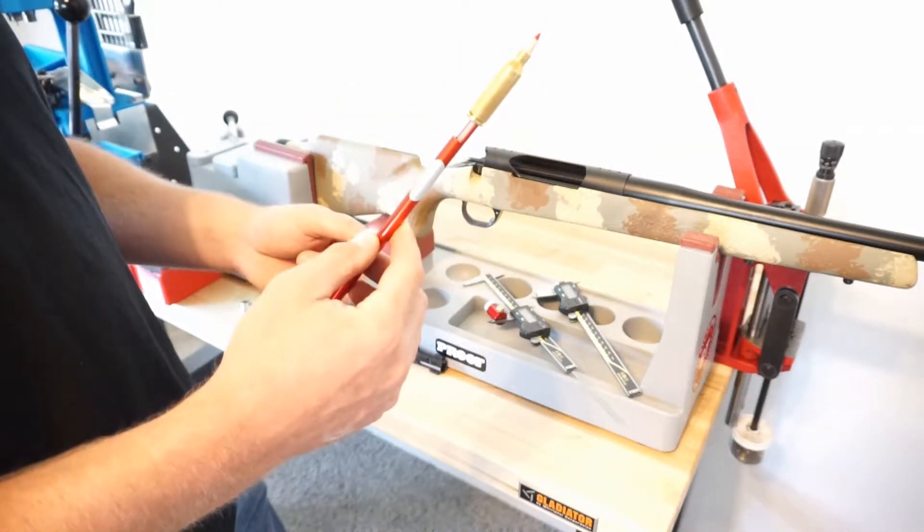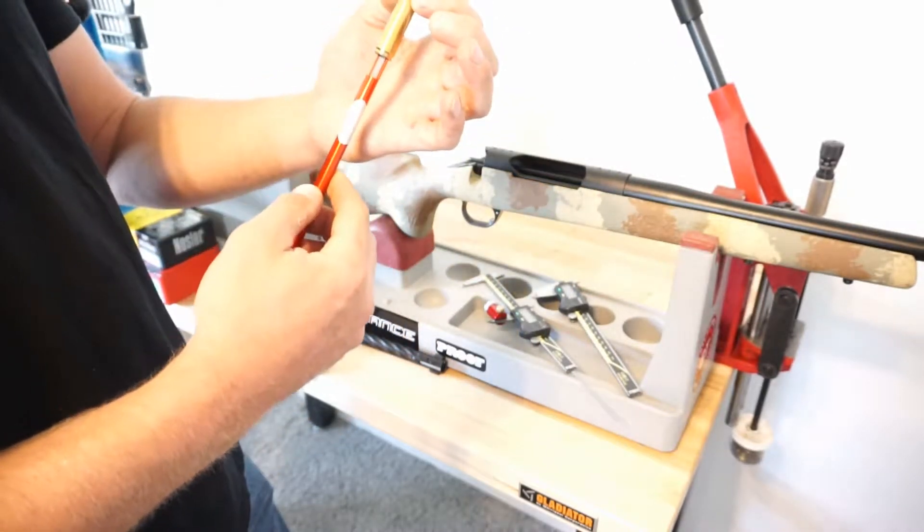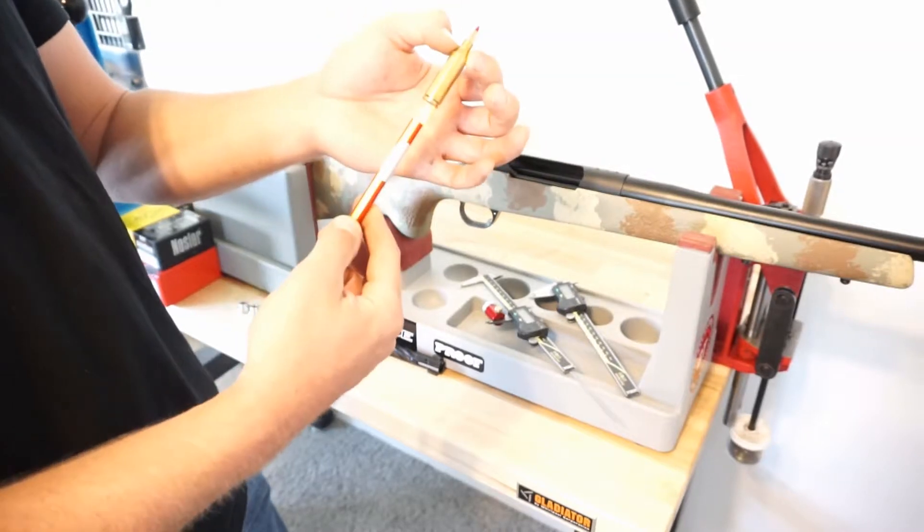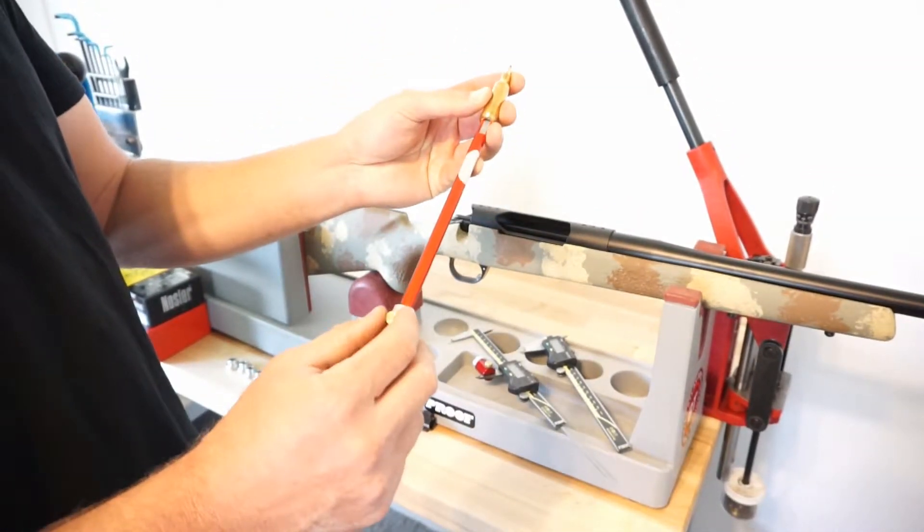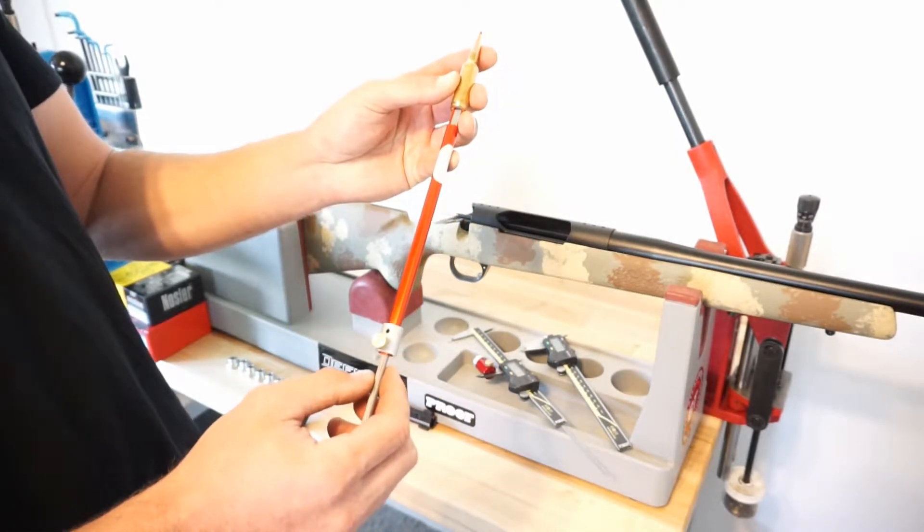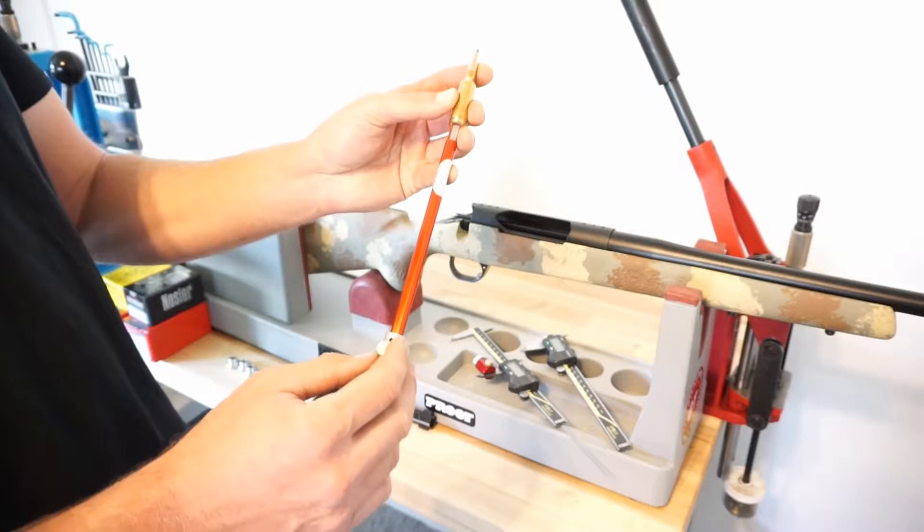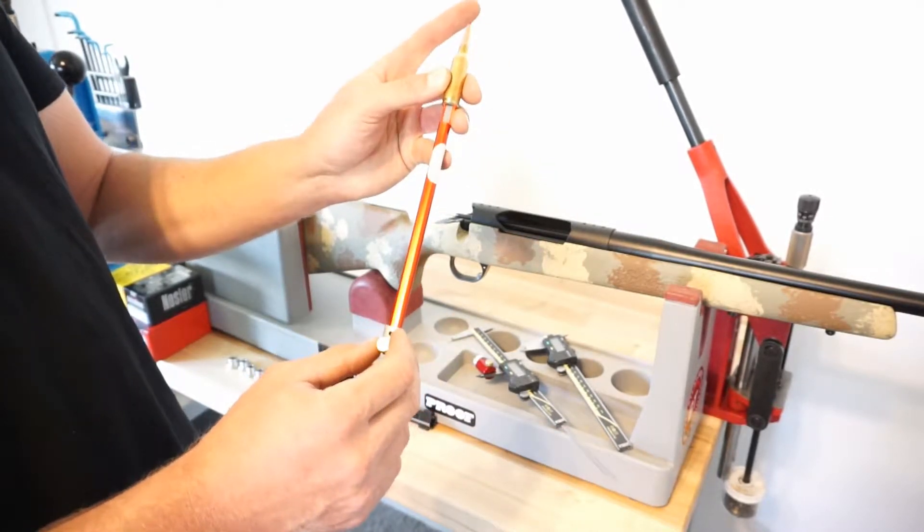This will get inserted through the bolt raceway of the rifle and against the shoulder area of your head spacing on this particular caliber. We're going to unlock it and we're going to push our bullet until it stops up into the lands of the rifle barrel. And then we're going to lock this down and that's going to be our measurement.